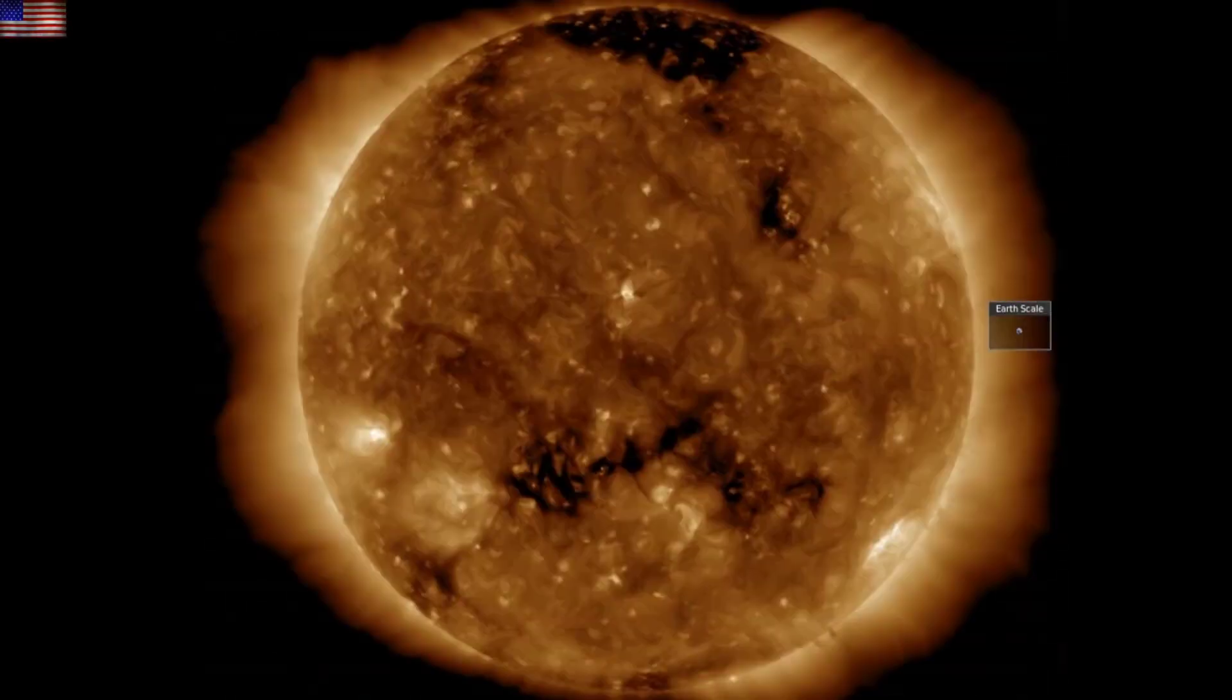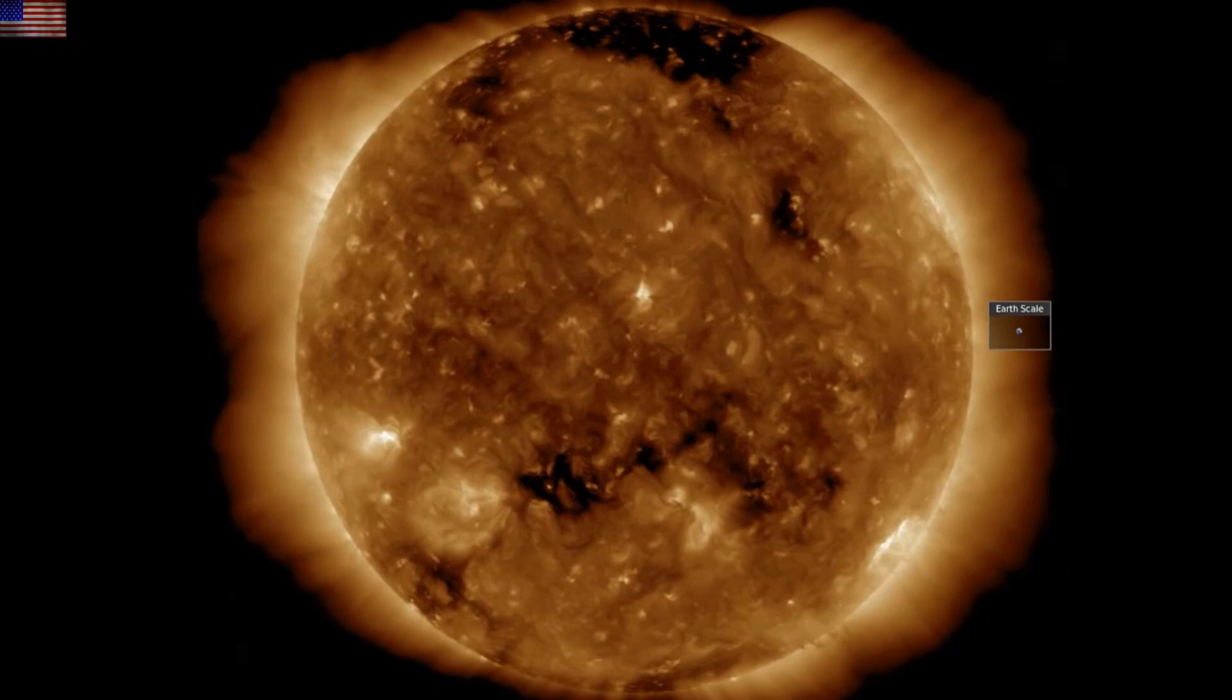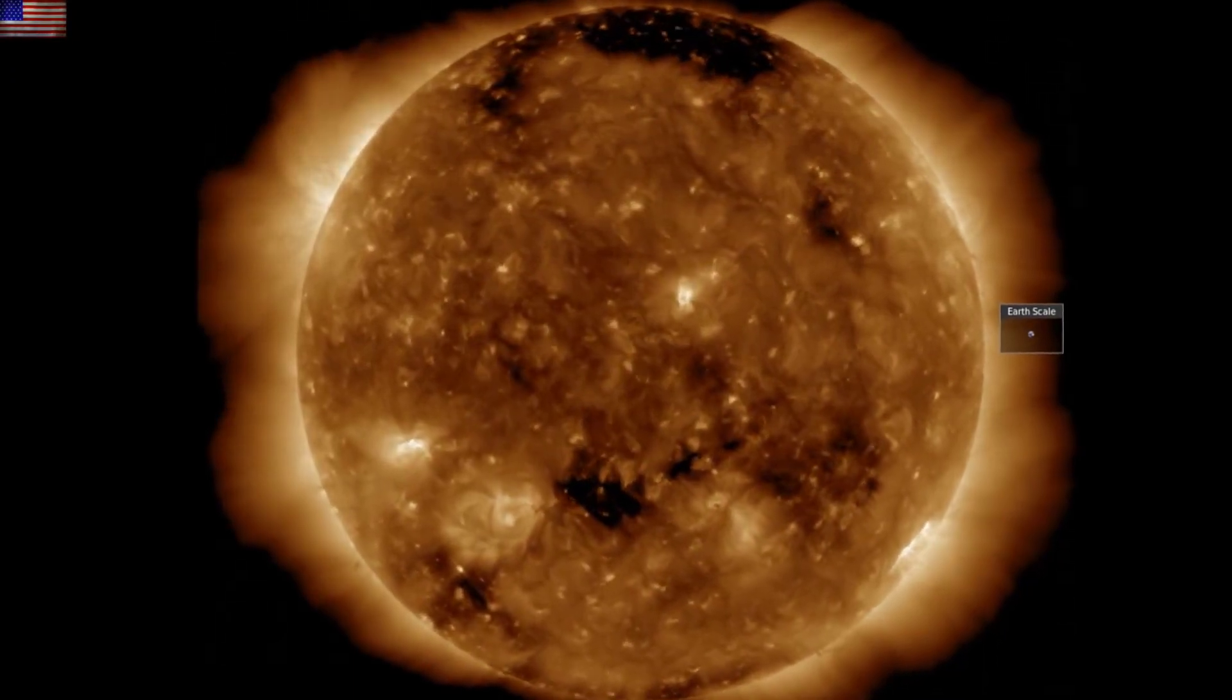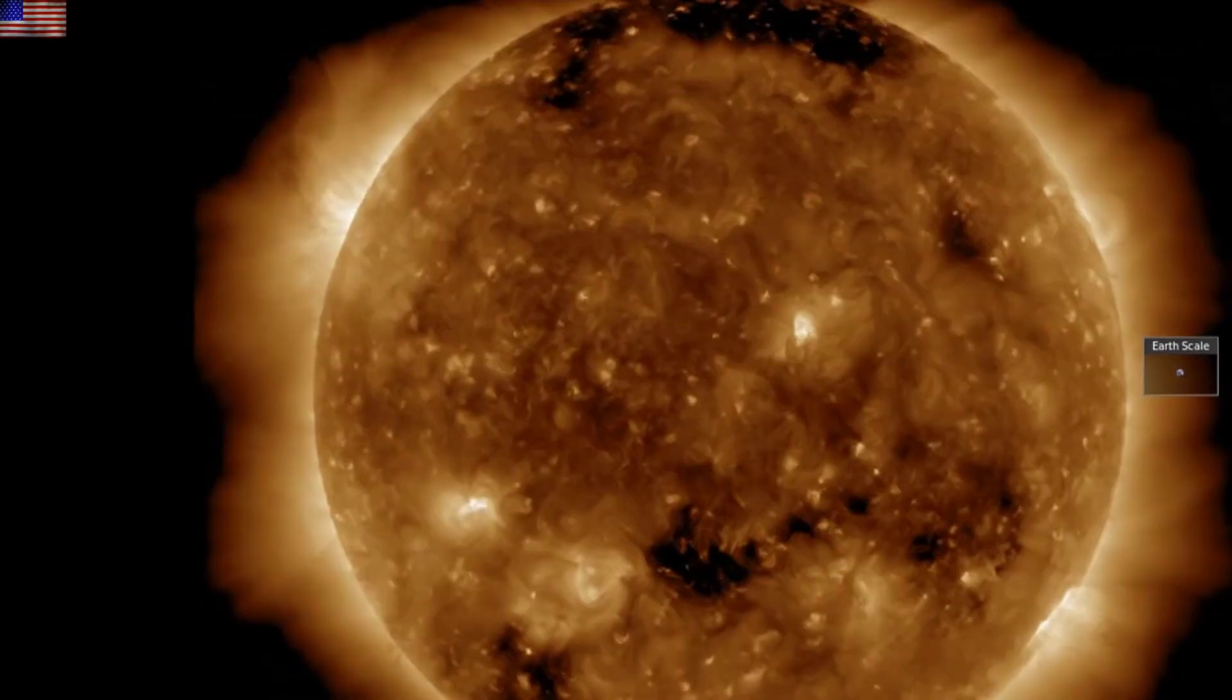But the coronal holes do continue to turn through. Enhanced solar wind from those is on its way to Earth, and in the coming days, we will be watching the sunspot group turn over the limb into our view as well.